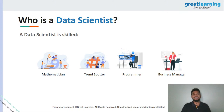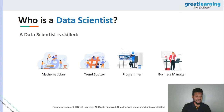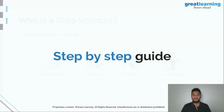The fourth important thing: a data scientist is a business manager. If you're wondering why a data science person needs to know business — the first three roles (mathematician, trend spotter, programmer) will solve the problem. But to solve the problem within a given timeframe, to stick to the timeline of the company or client, it becomes very important that they understand the business side of things: business requirements, when to deliver the project, and how they're supposed to deliver it. So understanding business is a very important aspect of a data scientist's role.